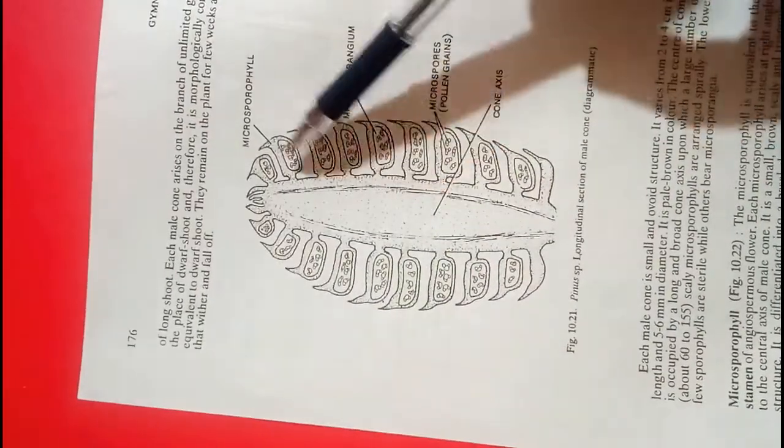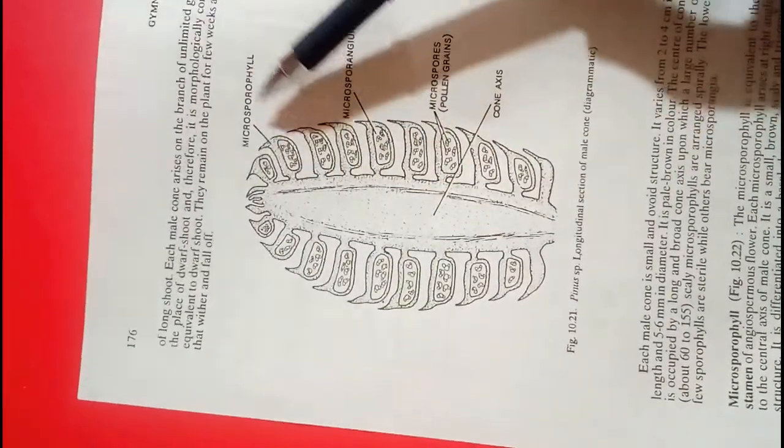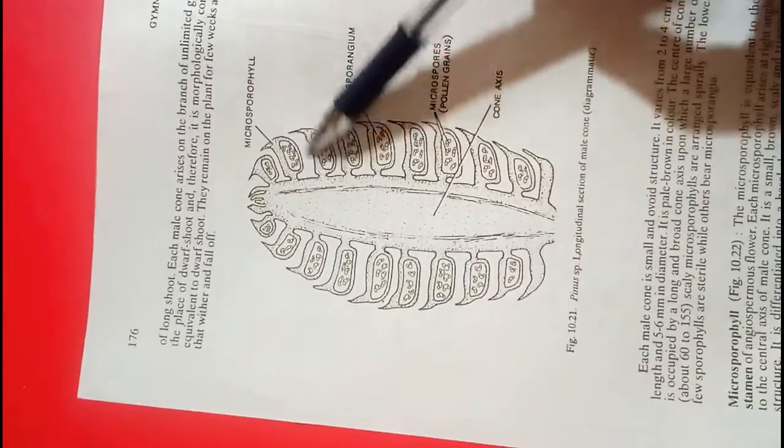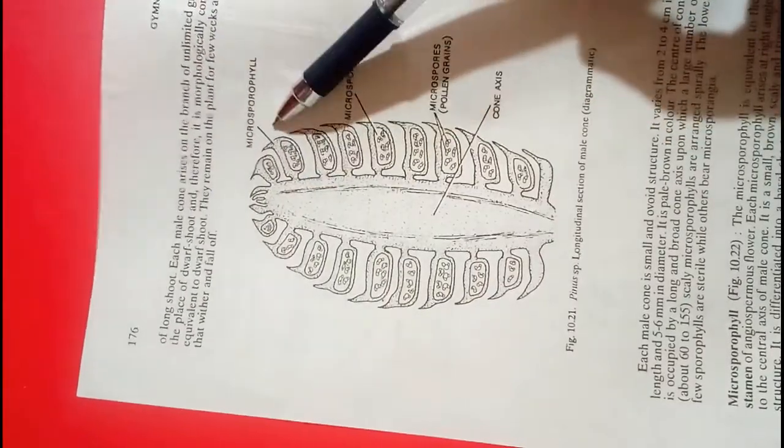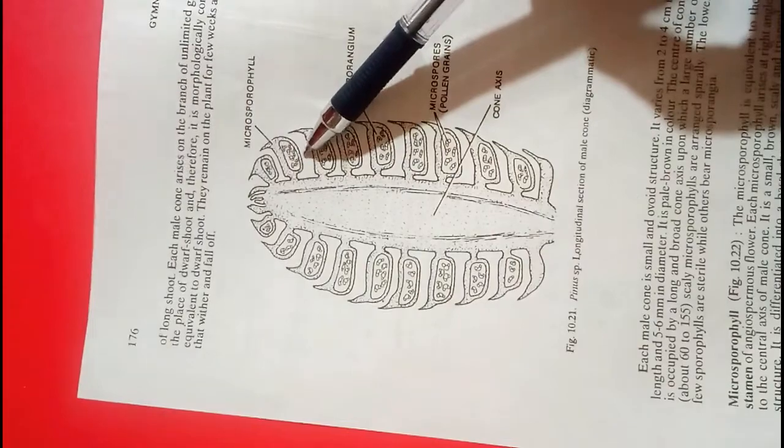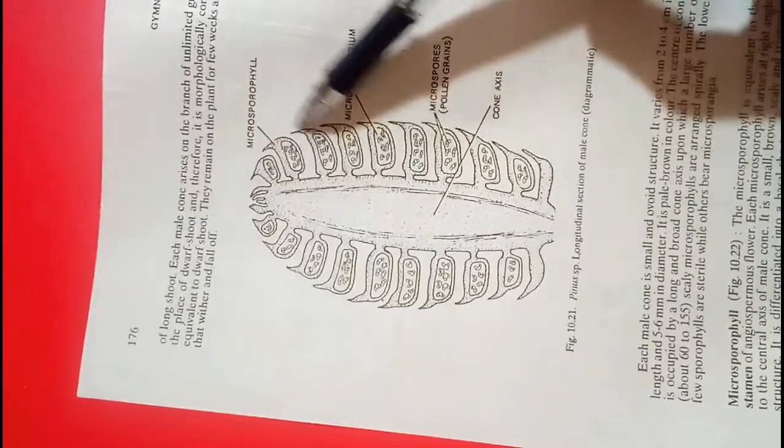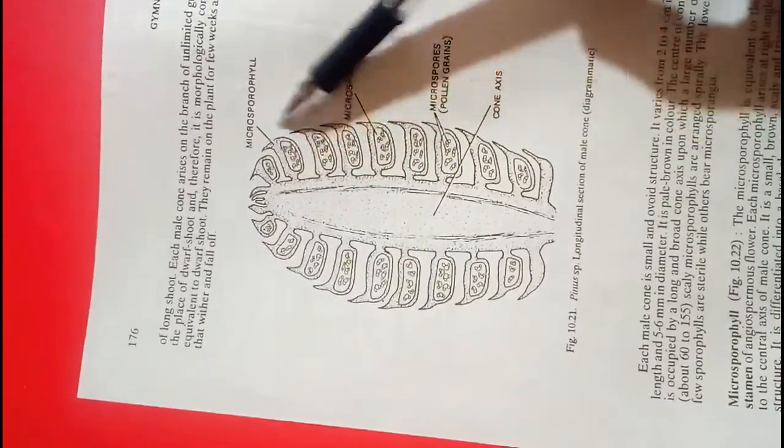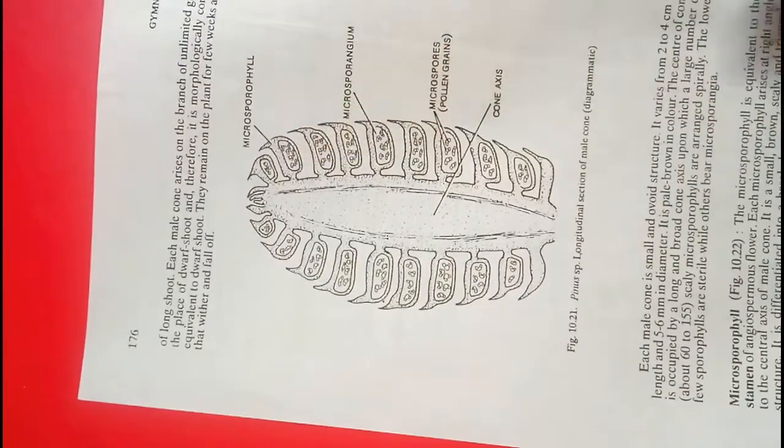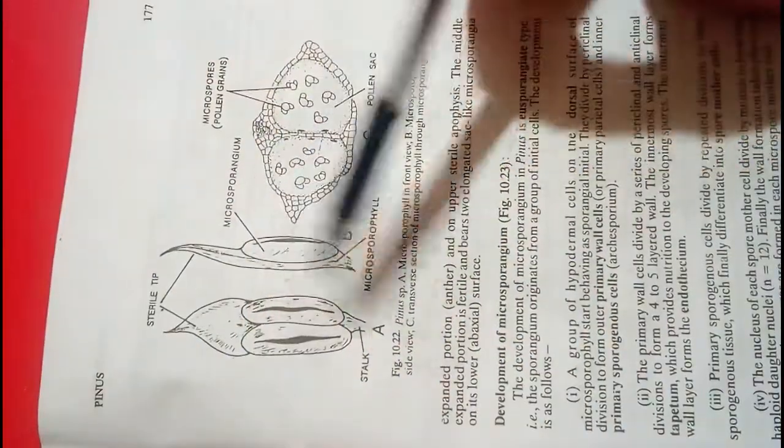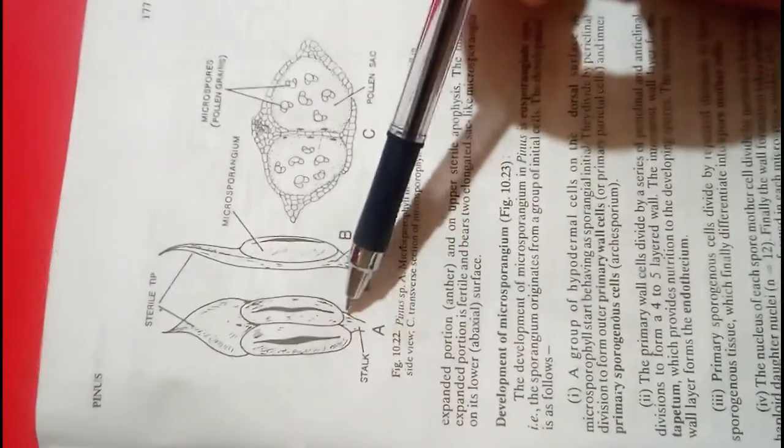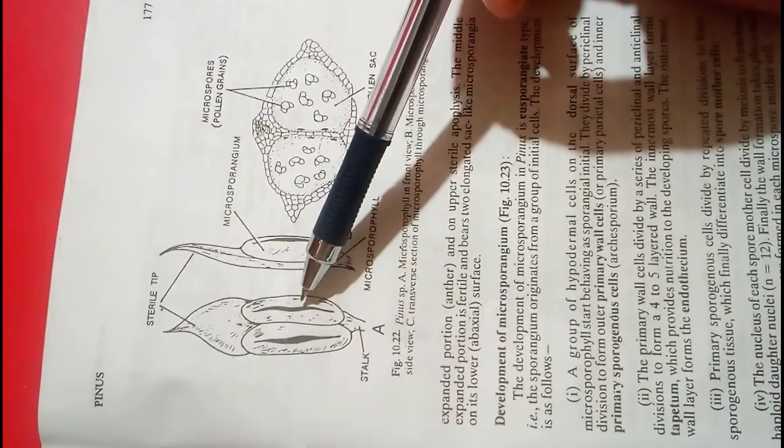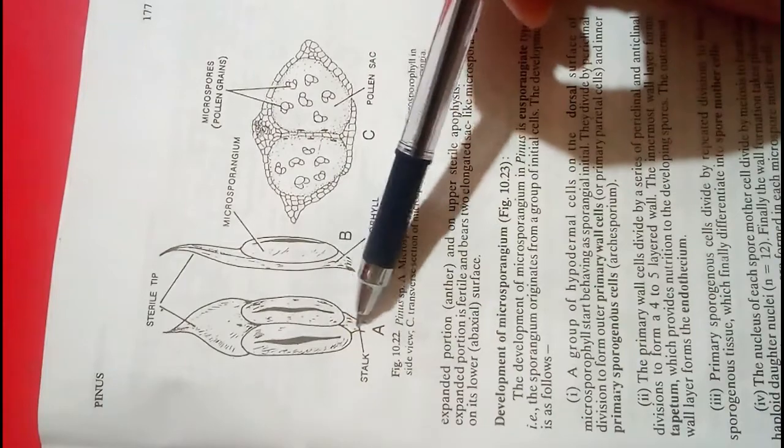The microsporophyll is usually small, brown in color, scaly, and triangular in structure. If you take a look at a single microsporophyll, you can see that it is differentiated into parts.